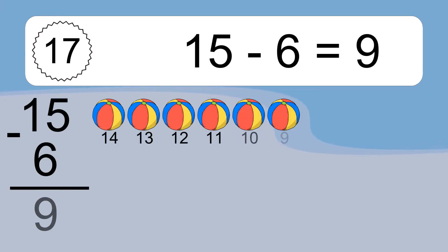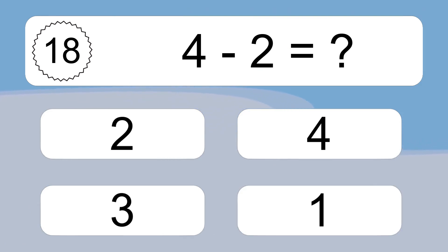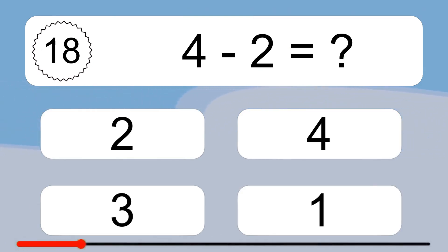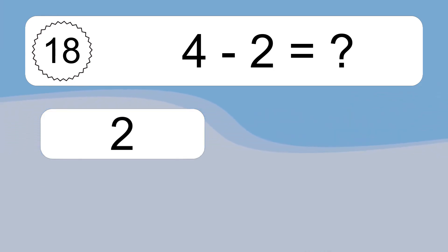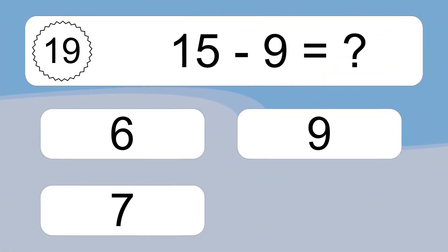15 minus 6 equals what? 15 minus 6 equals 9. Let's count it: 14, 13, 12, 11, 10, 9. 4 minus 2 equals what? 4 minus 2 equals 2. Let's count it: 3, 2.